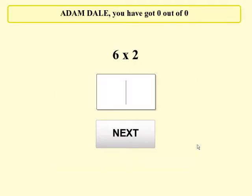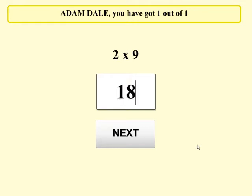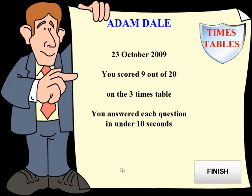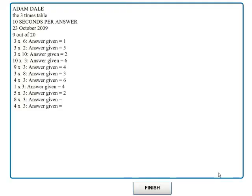During the test, pupils hear each question, and then have a limited amount of time to answer each question, dependent upon the difficulty level they are working on. After the test, pupils are shown their results, so they can see which answers they got wrong.